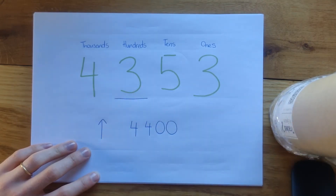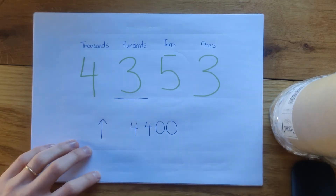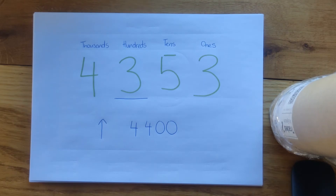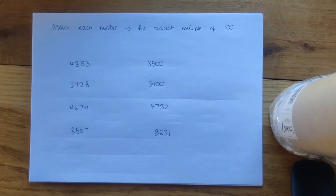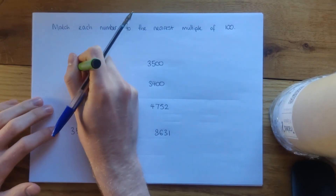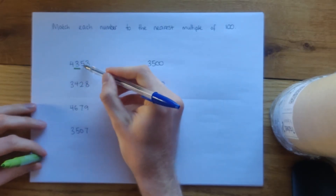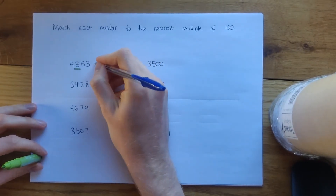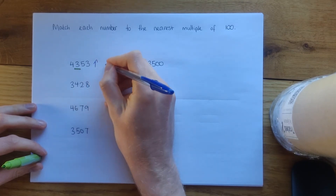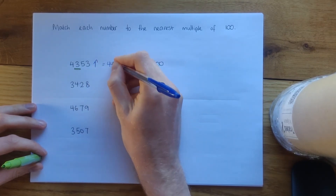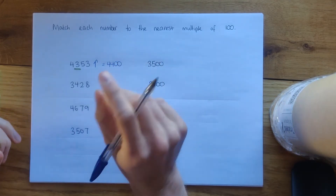We've rounded up our hundreds column — instead of three hundreds, we get 4,400. That's the closest hundred to 4,353. We rounded the three hundreds up to four hundreds because we had 50 in the tens column, so 4,353 rounded to the nearest hundred is 4,400.